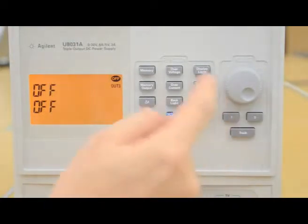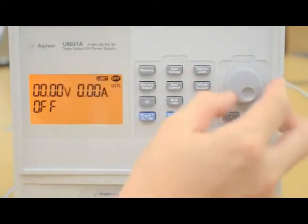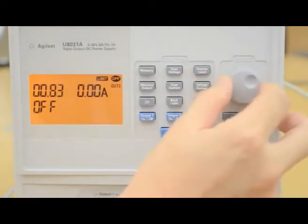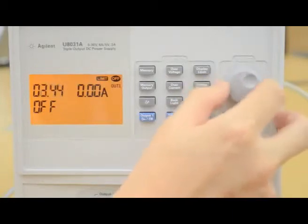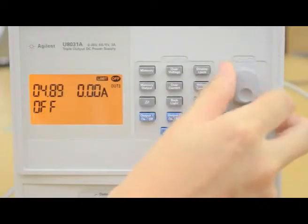First, press 1 to select output 1. Press Display Limit. The blinking V shows that we are at voltage limit setting. Turn the knob until the reading shows 5 volts.